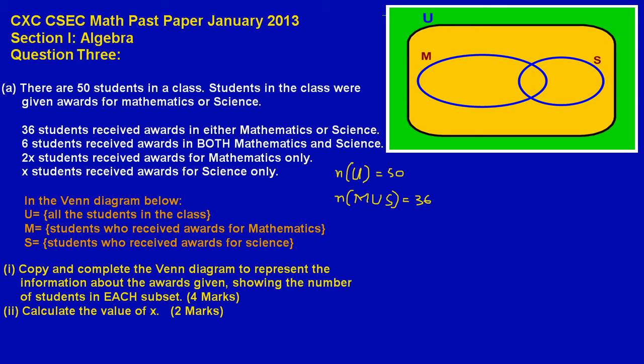Now pretty much from there, here in the second line they're saying that six students received awards in both mathematics and science. Now the fact that they use the word both means that they're speaking about the intersection. So here we would have 6 in our intersection.